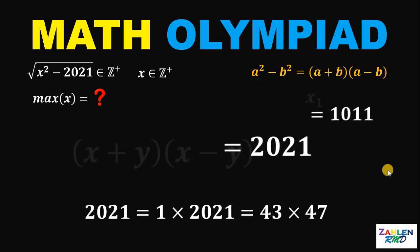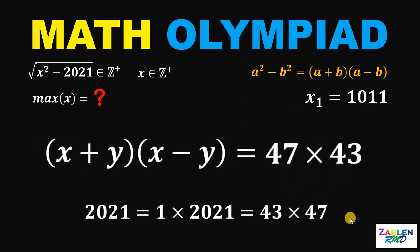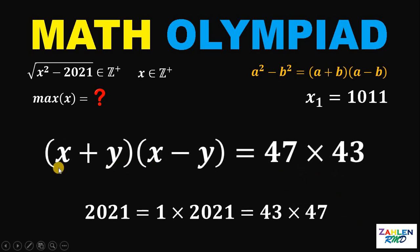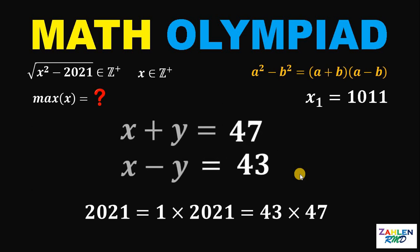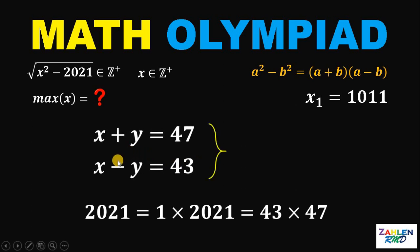Let's consider the other factors of 2021. Because 2021 is also equal to 43 times 47. Also take note that x plus y must be greater than x minus y, so x plus y is 47 and x minus y must be 43. Again, we have two equations and if we add those two equations, we cancel out the variable y.